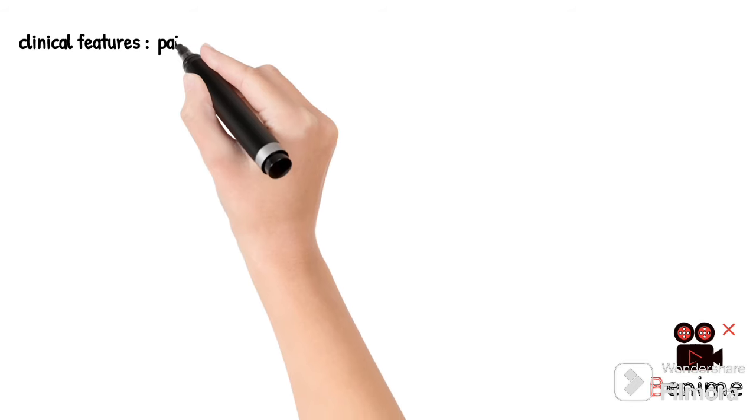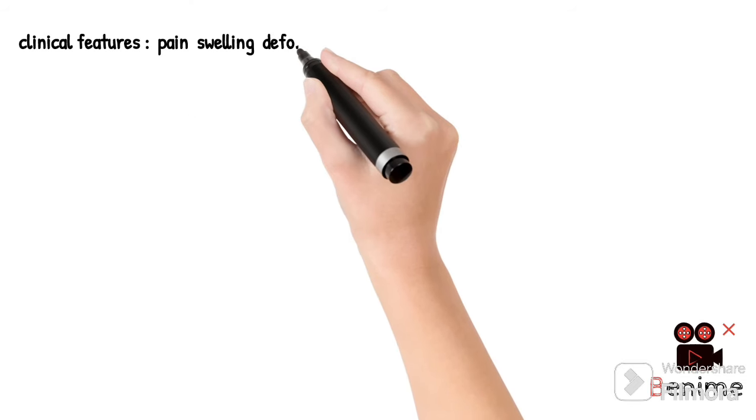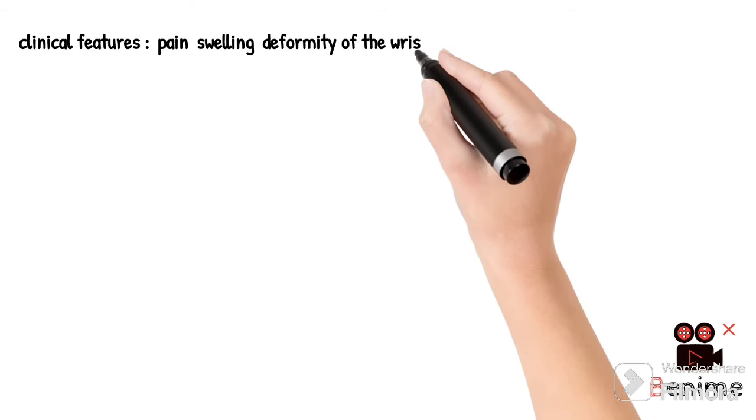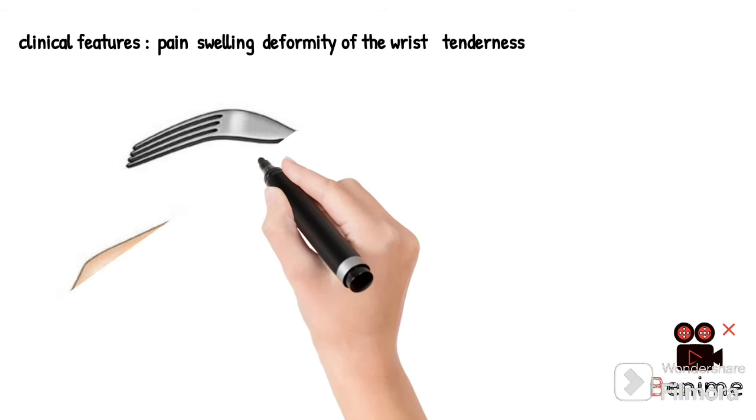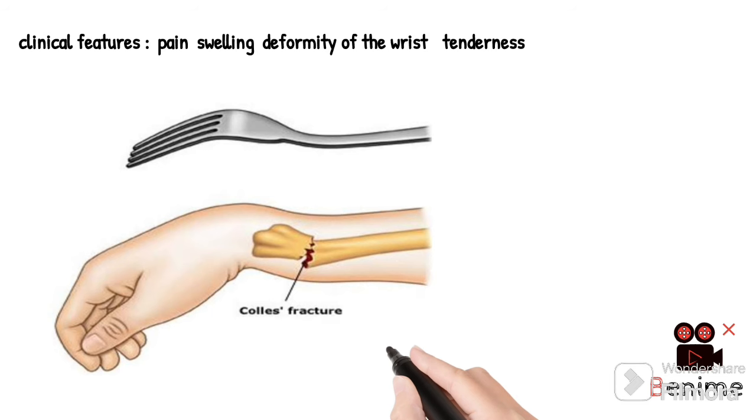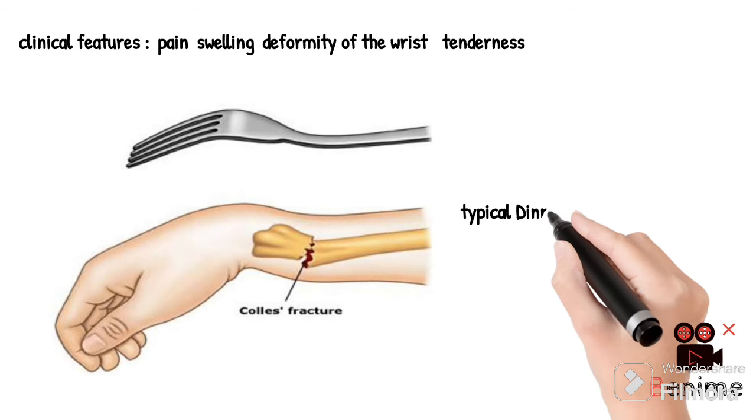Clinical features: pain, swelling, deformity of the wrist, tenderness. Typical dinner fork deformity can be seen in Colles fracture.